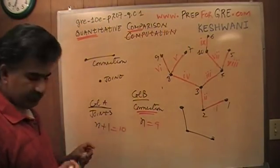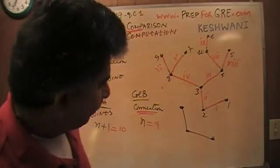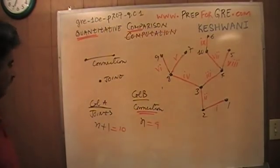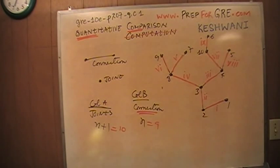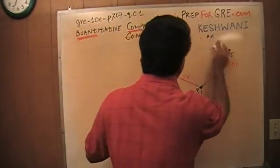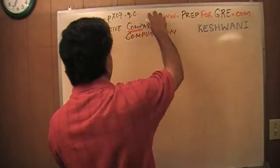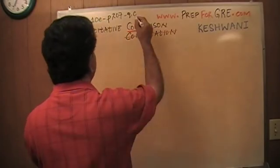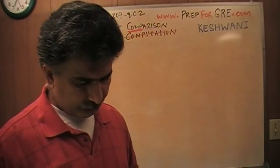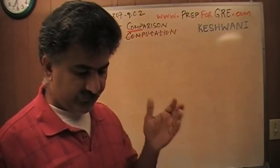As you can see, there are nine connections and ten joints — nothing to it. I don't know why I made a big fuss about it; it's a simple problem. So the answer to the first question was ten joints versus nine connections, and therefore the answer is A. Let's take a look at the second problem.